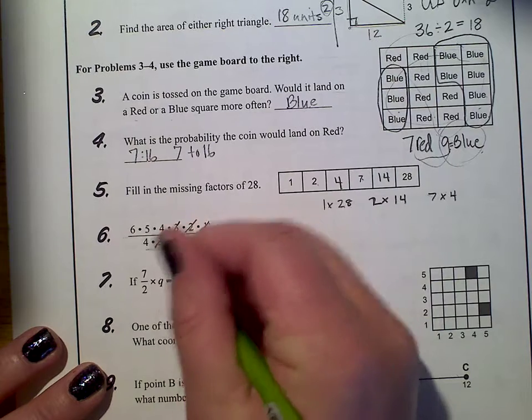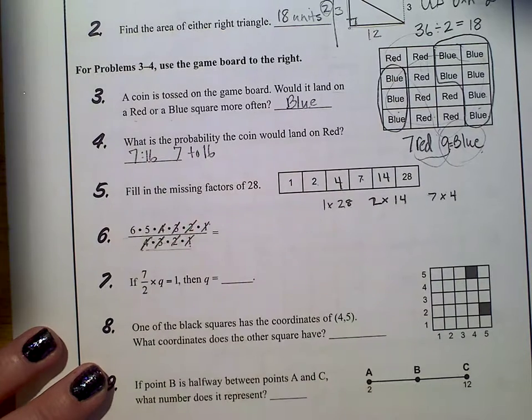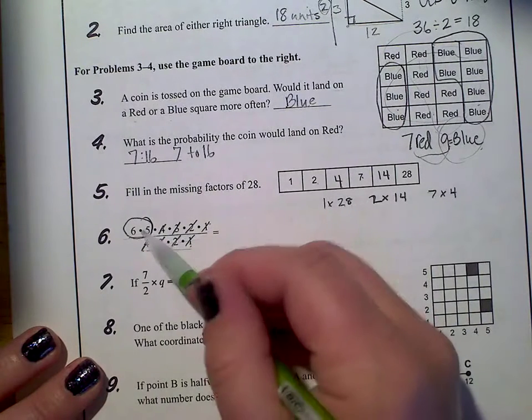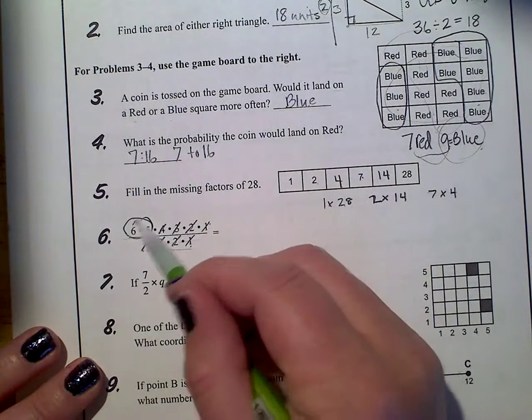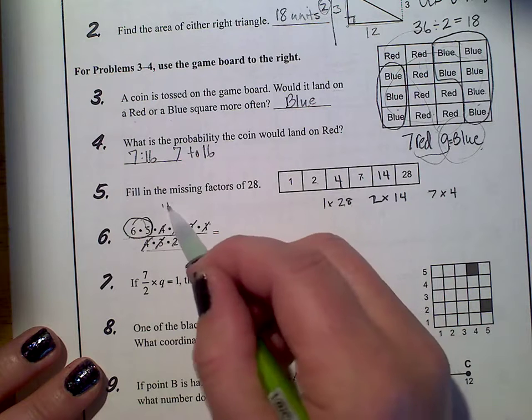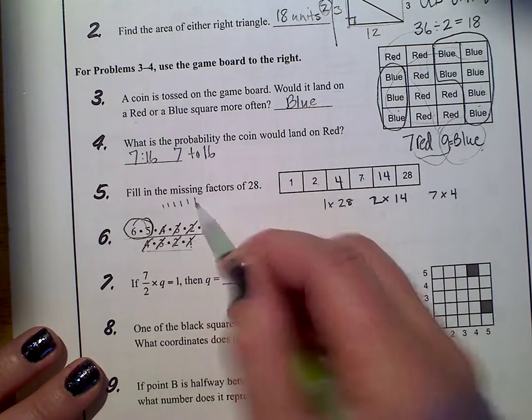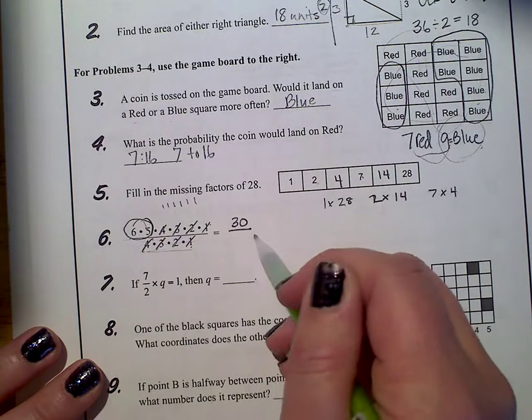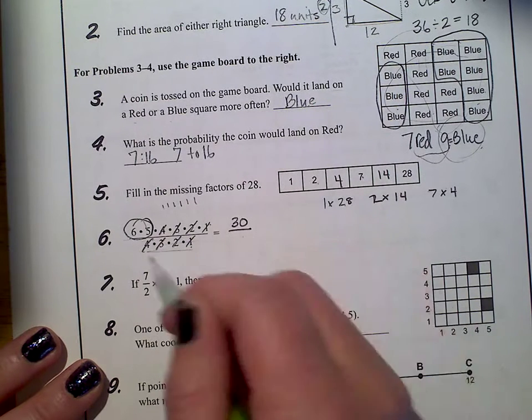So there's a 2 on top and on bottom. So we're pretty much simplifying this by removing factors that both the numbers would have in common if they were multiplied out. A 3 and a 4. Now you'll notice we ran out of numbers and we have 6 and 5 times 5 on the top. Remember that symbol means to multiply.